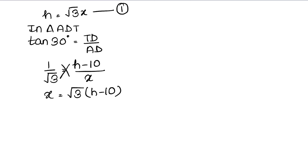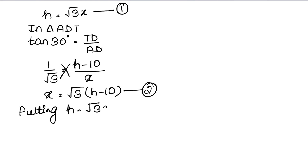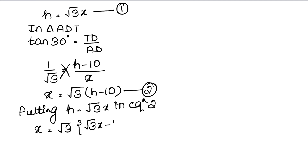Yeh pehli equation maanli. Ab second triangle ADT lete hain. In triangle ADT, perpendicular hai TD aur base hai AD. Formula lagaya: tan 30° = TD / AD. Tan 30° ki value hoti hai 1/√3. TD nikla tha H minus 10 aur AD nikla tha x. Toh (H−10)/x cross multiply kiya, toh x = √3·(H−10) — yeh second equation. Putting H = √3·x in equation 2.